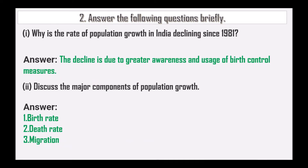The next question: answer the following questions briefly. Why has the rate of population growth in India declined since 1981? The decline is due to the greater awareness and usage of birth control measures.